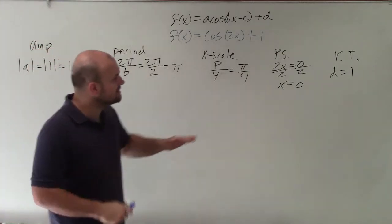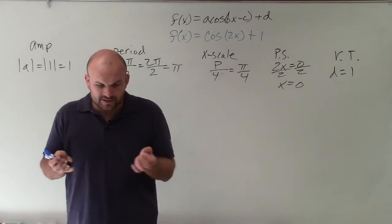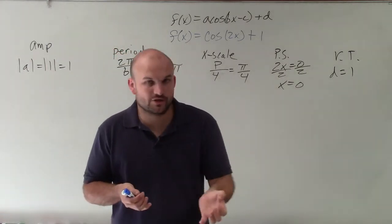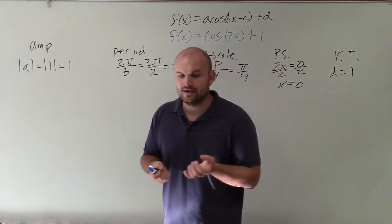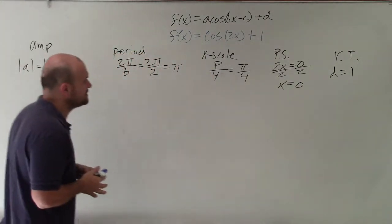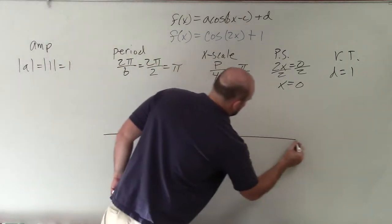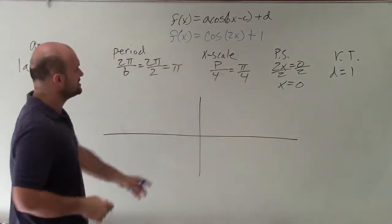When graphing this, I always like to start at my phase shift, because when we look at the initial period, we start at 0 for the cosine graph. So if we're shifting it left or right, start at that new value. But you can see here, there is no phase shift. I'm starting again back at 0.